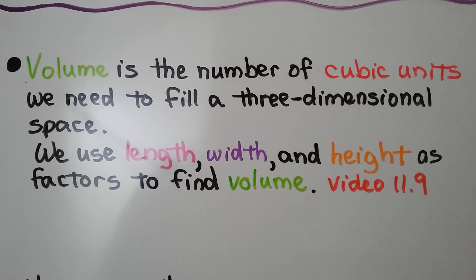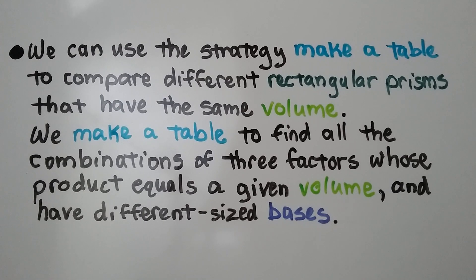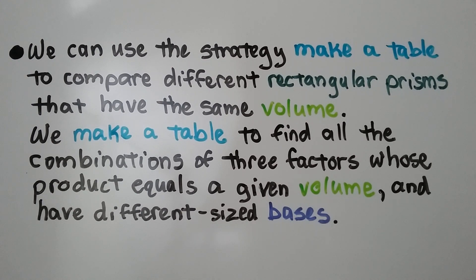Volume is the number of cubic units we need to fill a three-dimensional space, and we use length, width, and height as factors to find volume. We can use the strategy make a table to compare different rectangular prisms that have the same volume. We make a table to find all the combinations of three factors whose product equals a given volume, and have different sized bases.